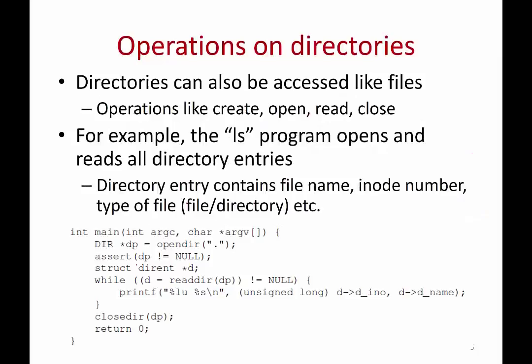Similarly, there are a whole bunch of system calls for directories. You can create a directory, open a directory, read a directory, and so on. For example, here is code for a simple ls-like program. All commands like ls are simply C programs compiled into executables that use these system calls. The ls program opens a directory and reads every entry. There is a structure called the directory entry which has the file name, the inode number, and so on. You call readdir multiple times and read every entry, then print it out. A directory is treated like a file — it just has records of file name and inode number.